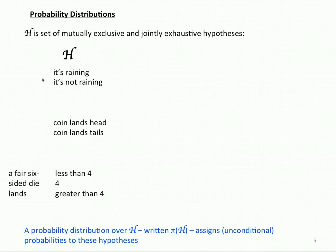A probability distribution over Latin H, written π(H), assigns probabilities to the hypotheses in Latin H.